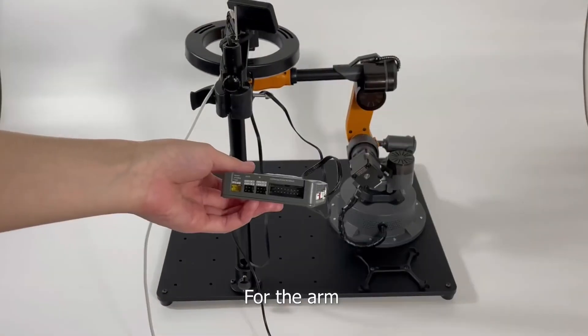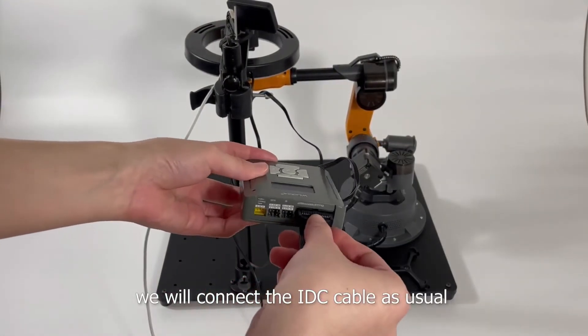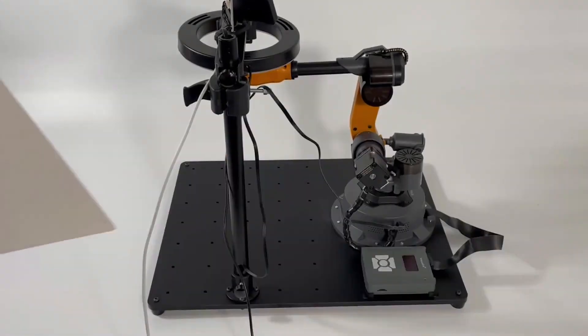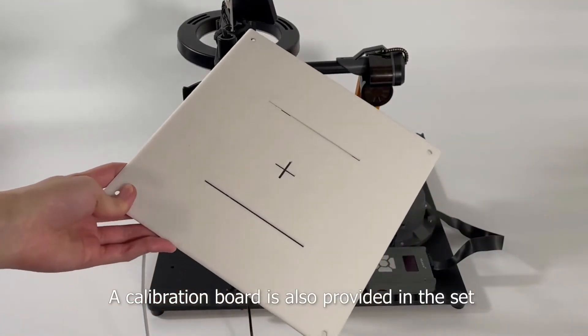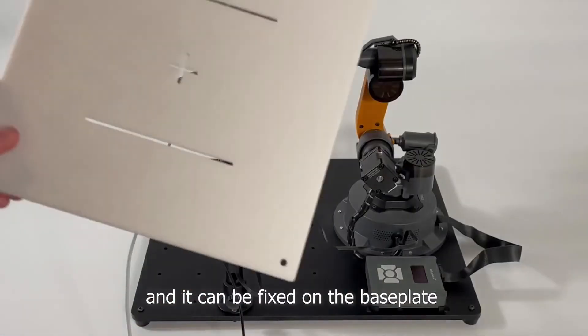For the arm, we will connect the IDC cable as usual. A calibration board is also provided in the set, and it can be fixed on the base plate.